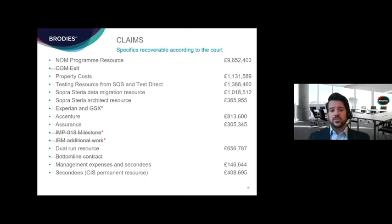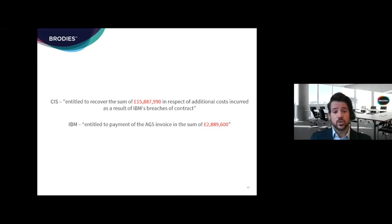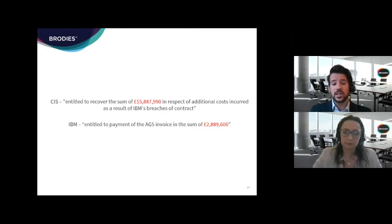Although the wasted expenditure claim failed, it was found that there were additional costs which CIS had incurred which were recoverable and not caught by the exclusion clause — things like resources, property costs, and costs CIS had been seen to have incurred and ought to be recoverable. Ultimately, the court found that although the exclusion clause had significantly reduced the claim, CIS was still entitled to recover $15,887,990 in respect of additional costs incurred as a result of IBM's breaches. However, IBM was nevertheless still entitled to payment of their milestone invoice, to be deducted from the amounts due.